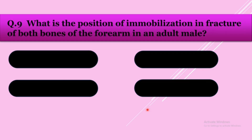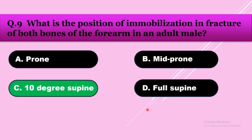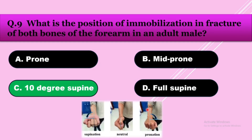Question number nine: What is the position of immobilization in fracture of both bones of the forearm in an adult male? Option A: prone, option B: mid-prone, option C: 10 degree supination, option D: full supination. The answer is 10 degree supination. From the neutral position of the forearm, 10 degree supination is the ideal position of immobilization for both bone fracture of the forearm.